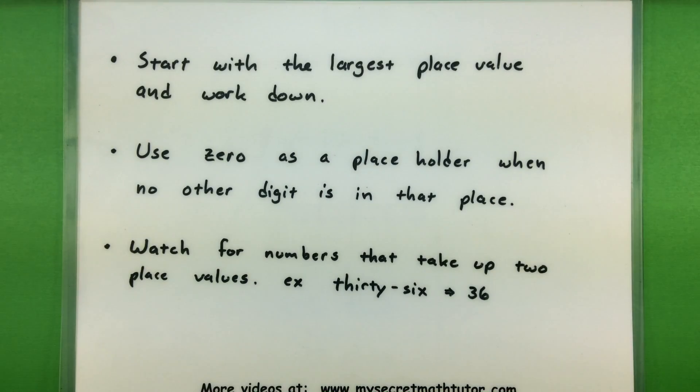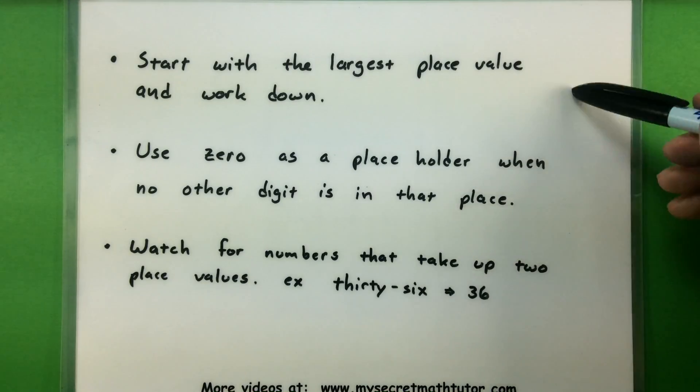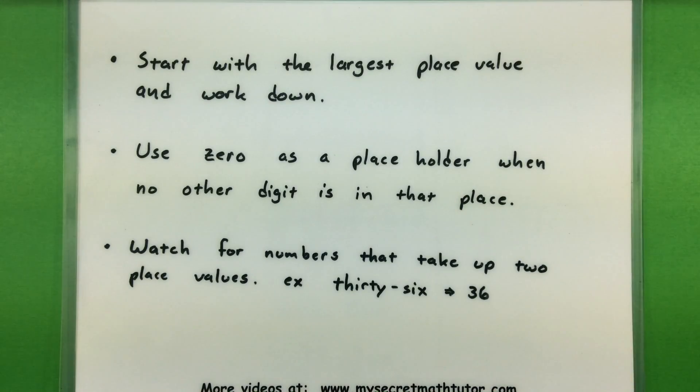You want to start with the largest place value and then work your way down. Only use a zero as a placeholder when no other digit is in that place. You'll see this in my examples when we'll come across a place where it doesn't look like a number is in there. We'll go ahead and put a zero in there instead.